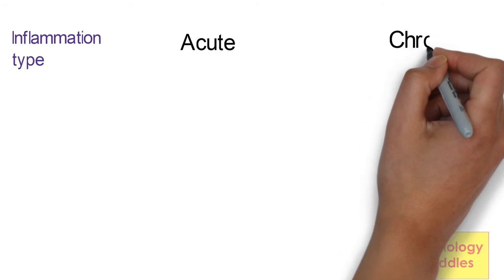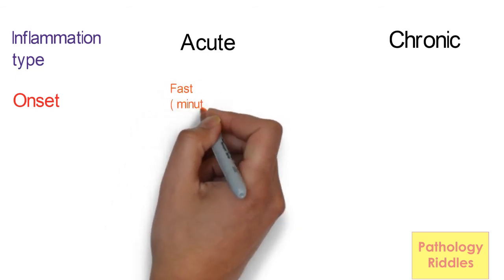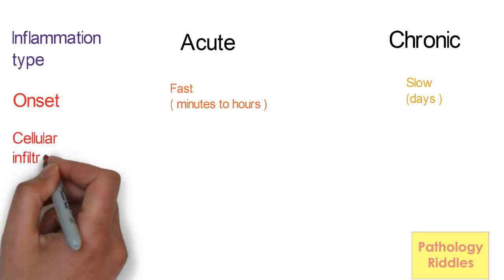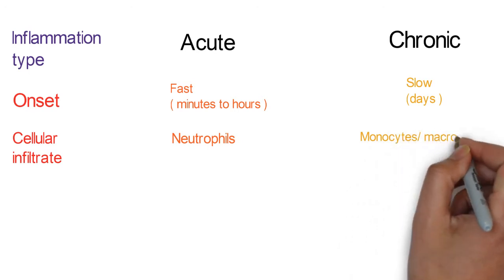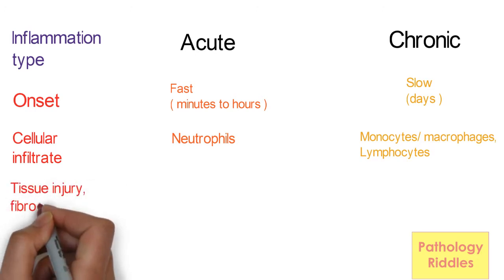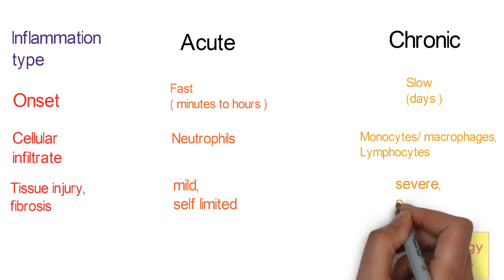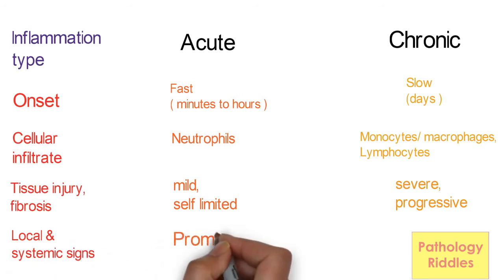Inflammation is of two types: acute and chronic. Acute occurs first, followed by chronic. The onset of acute is fast, within minutes to hours, while the onset of chronic is slow, happening over days. The cellular infiltrate in acute inflammation is mainly neutrophils, while in chronic it is monocytes, macrophages and lymphocytes. Tissue necrosis and fibrosis are usually mild and self-limited in acute, while they are often severe and progressive in chronic. Local and systemic signs are prominent in acute while they are less prominent in chronic.